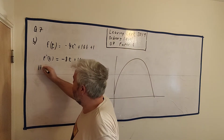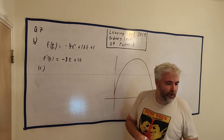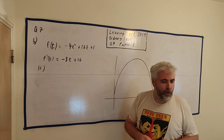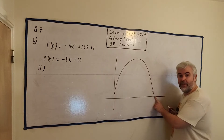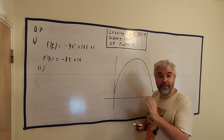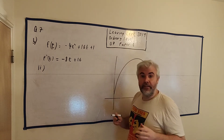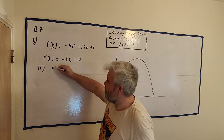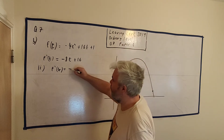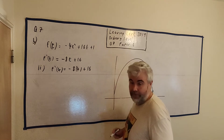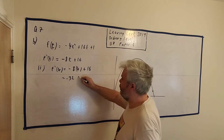D part 2 asks us to use differentiation to find the speed of the ball when it had been in the air for 4 seconds. The speed equals the derivative of distance, so the derivative of height tells us speed. We want the derivative after 4 seconds. We fill in f'(4) = minus 8 times 4 plus 16. That's equal to minus 32 plus 16.